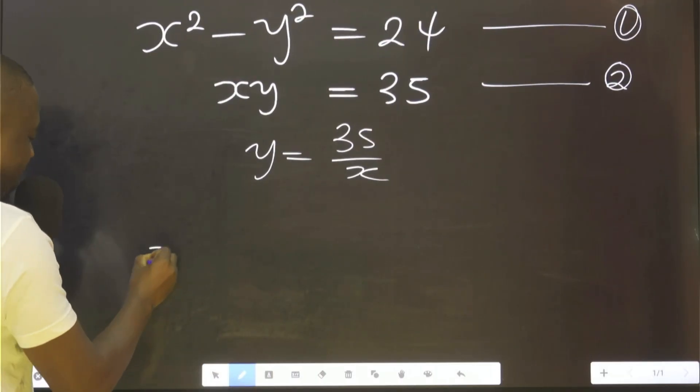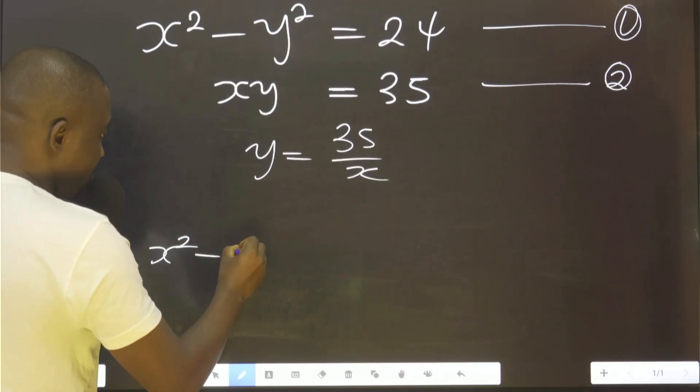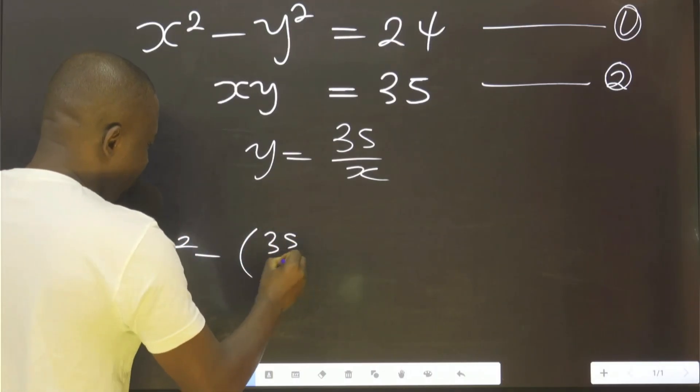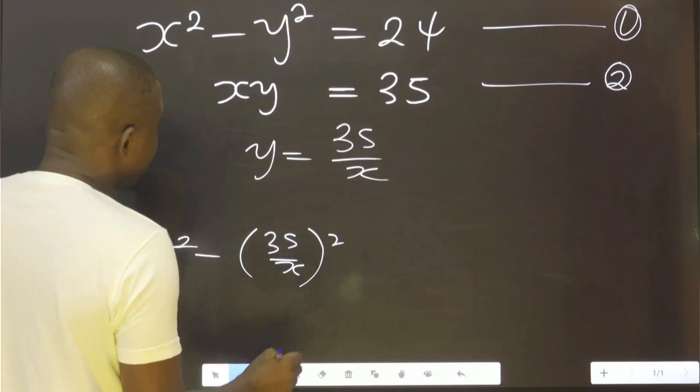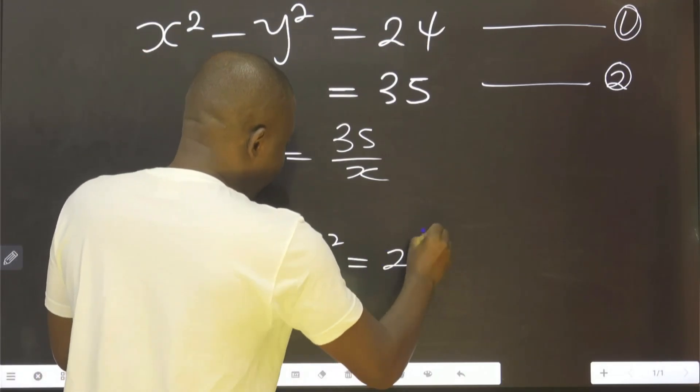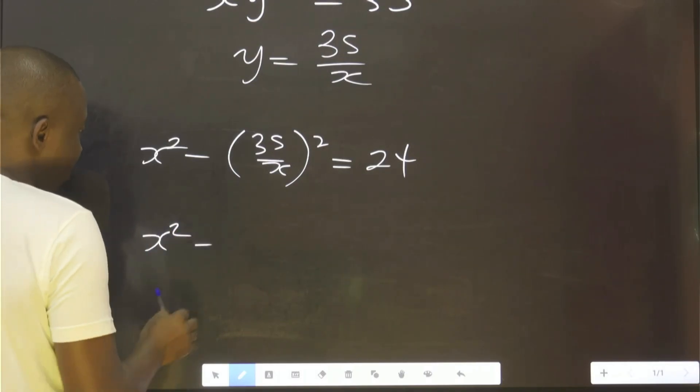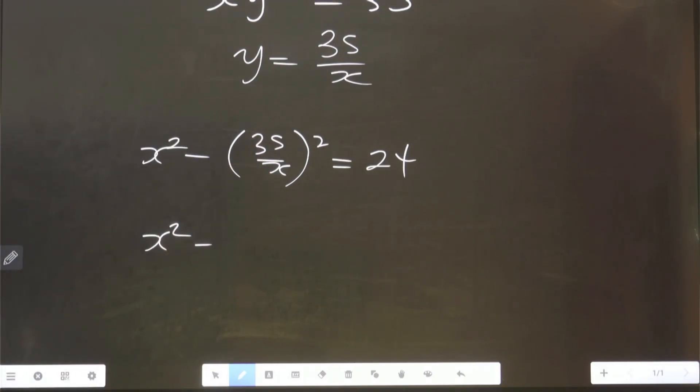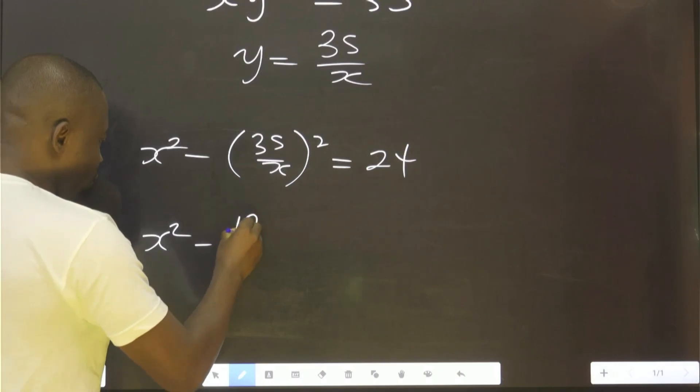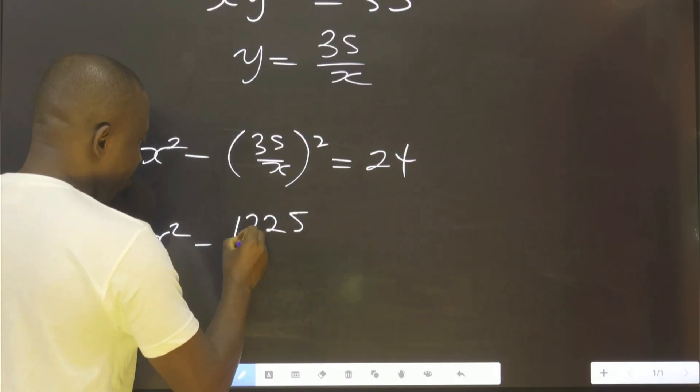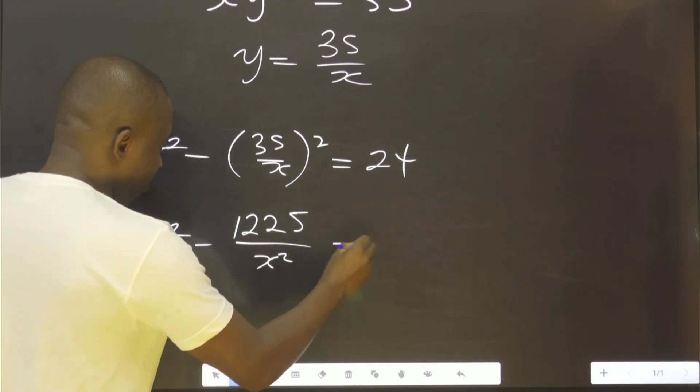That is to say, x² - (35/x)² = 24. You agree with me? This is -35 multiplied by 35, that is 1225 all over x² equals to 24.